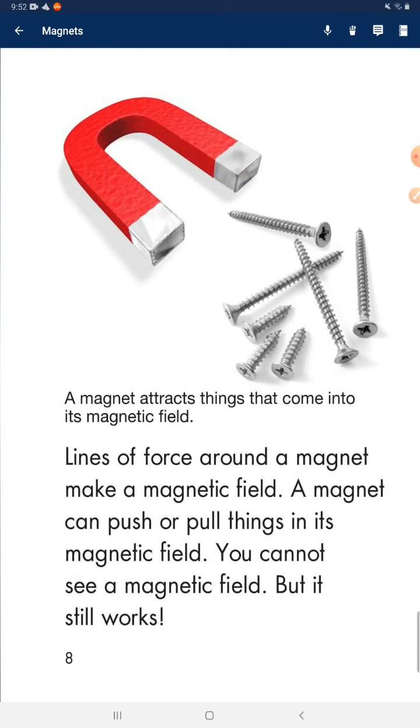Lines of force around a magnet make a magnetic field. A magnet can push or pull things in its magnetic field. You cannot see a magnetic field, but it still works.